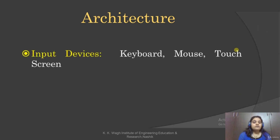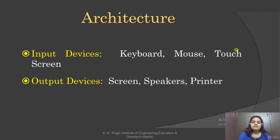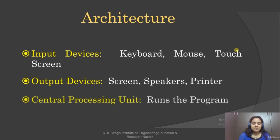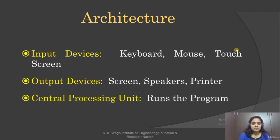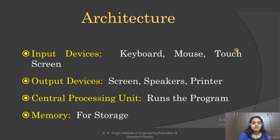What is in the hardware? We have few input devices — for example, keyboard, mouse, touchscreen. Output devices can be a screen, speakers, or printer. Central Processing Unit, known as CPU, runs the actual program — processing is done basically in CPU. Memory is obviously used to store all these instructions and software.